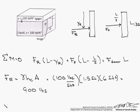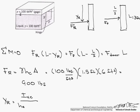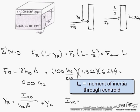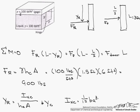Next let's calculate our y sub r, which is I sub xc divided by h sub c times A, plus y sub c. And if you remember, because of water and how it changes as you go down, y sub r is always going to be larger than y sub c. We have to go into our book to find the equation for I sub xc. For a rectangle, it is 1/12 times b times a cubed. Our b is our horizontal length, which is 2, and our a is our vertical, which is 3 cubed. So our I sub xc is 4.5 feet to the fourth.